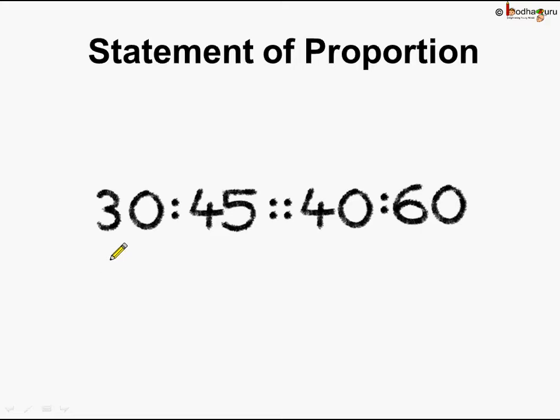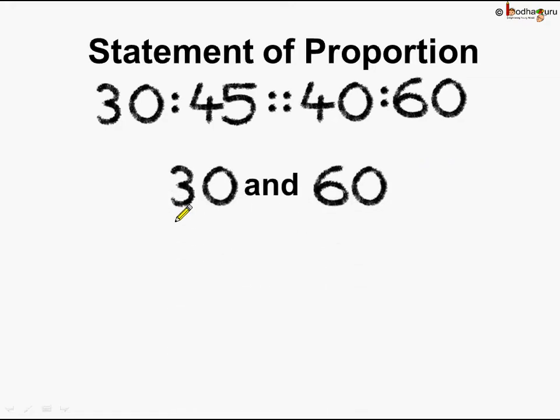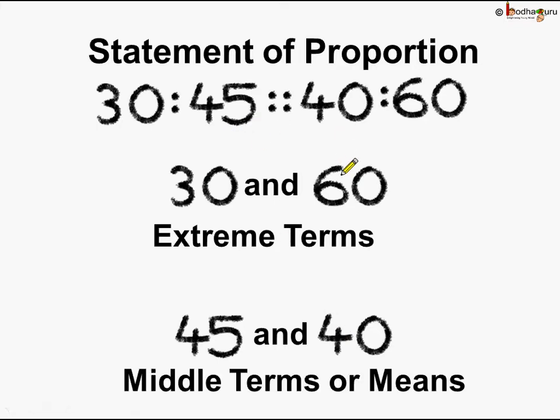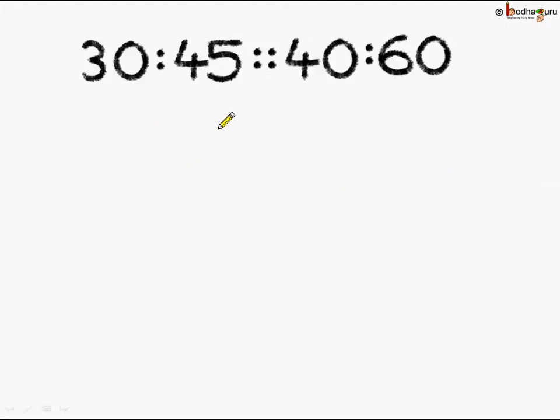Here, if we read all the four quantities in order, then they are known as the respective terms. So in 30 is to 45 is as 40 is to 60, the numbers 30 and 60 are the extreme terms, and 45 and 40, the inner ones, are called the middle terms or the means.